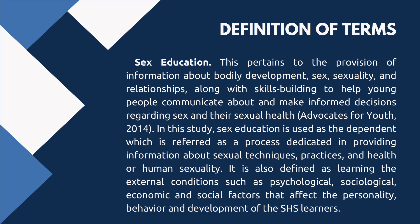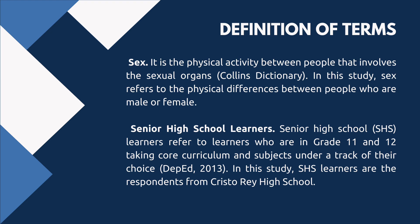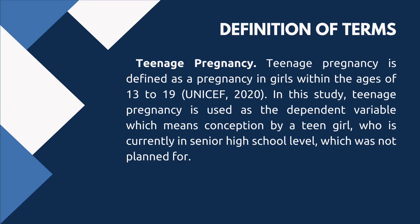Sex education pertains to the provision of information about bodily development, sex, sexuality, and relationships, along with skills-building to help young people communicate about and make informed decisions regarding sex and their sexual health (Advocates for Youth 2014). In this study, sex education is used as the dependent variable, referring to a process dedicated to providing information about sexual techniques, practices, and health or human sexuality, including external conditions such as psychological, sociological, economic, and social factors affecting personality, behavior, and development of SHS learners. Sex refers to the physical differences between people who are male or female. Senior high school learners refer to learners in Grade 11 and 12 taking core curriculum subjects under a track of their choice (DepEd 2013).